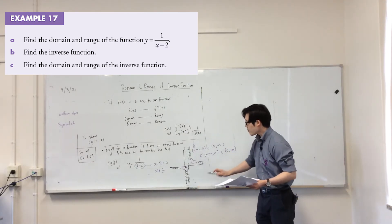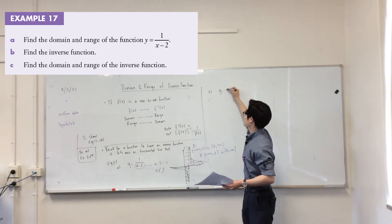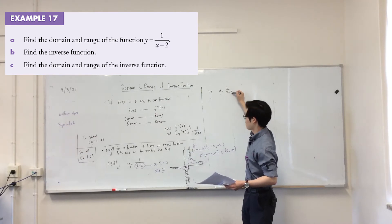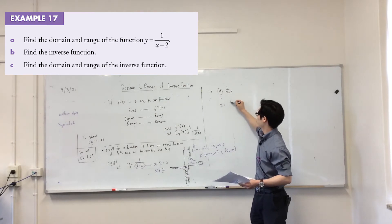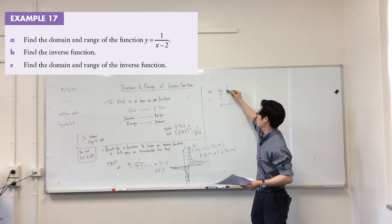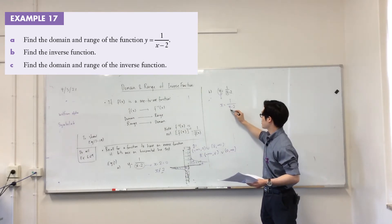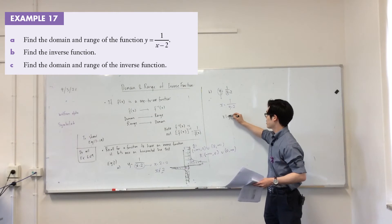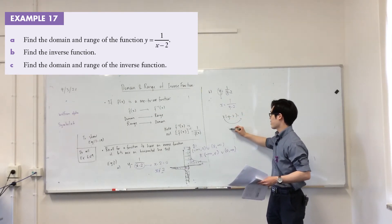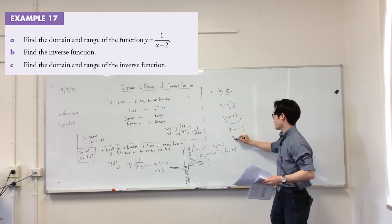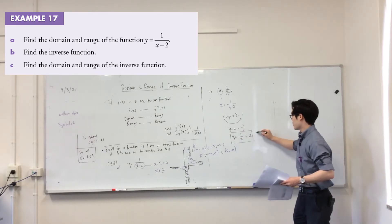Now let's have a look at example B — find the inverse function. From the previous exercise, the first step is to swap the letters around, then make y the subject. Multiplying across and rearranging: y minus 2 equals 1 over x, so y equals 1 over x plus 2. This is the inverse.